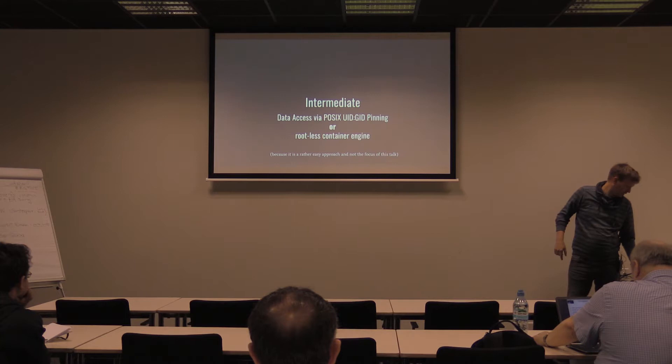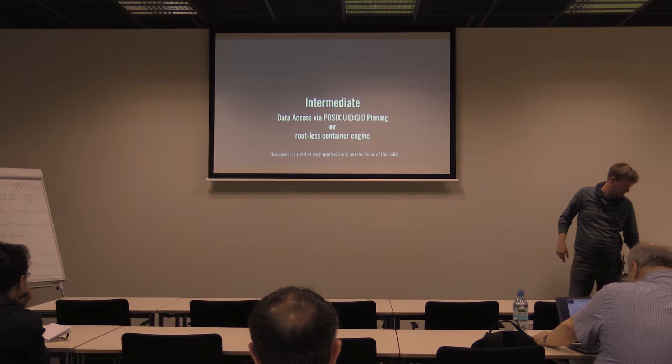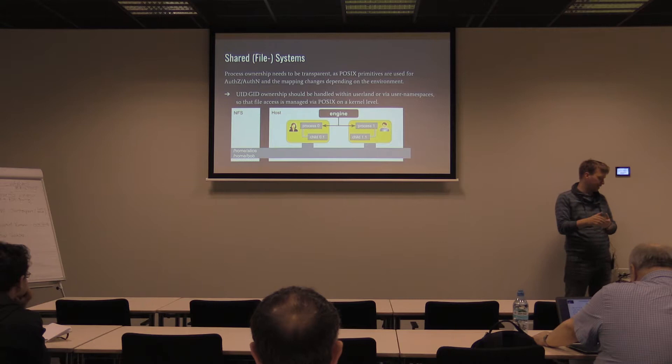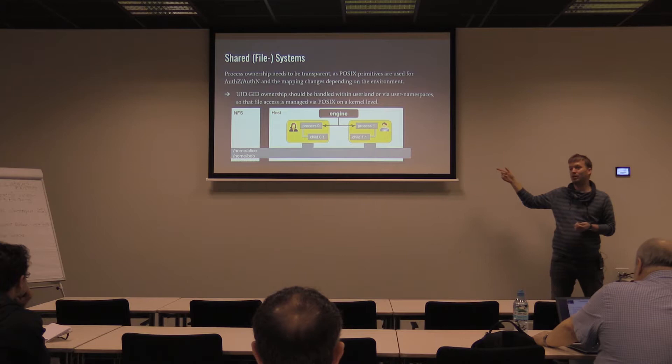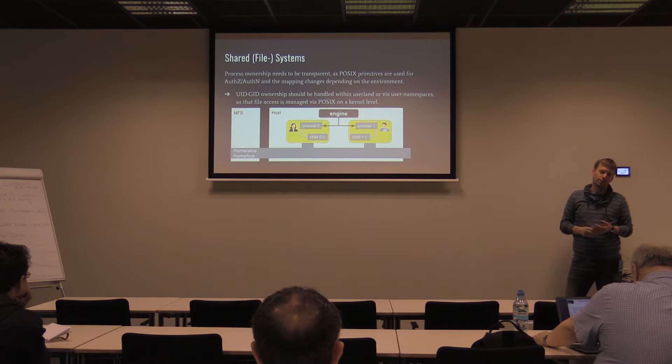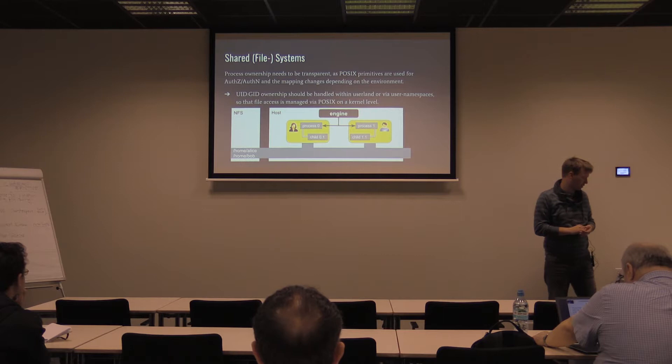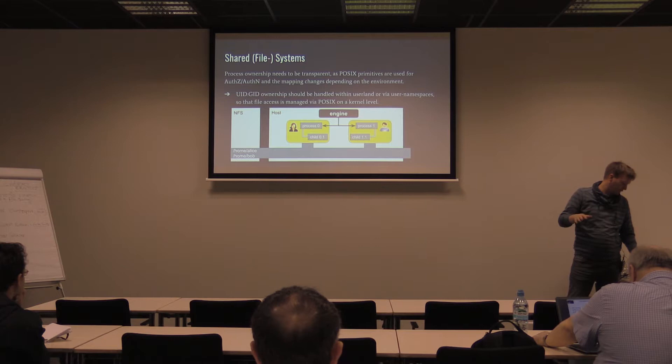The more important second piece of hardware access is shared file system access. One approach is to map the user ID and group ID within the container — so if you're 'bob', your processes run as your user ID and when you access a shared file system the kernel grants access via your user ID and group ID, giving you the same access model as outside the container. This should solve many current problems, though I've heard from Michael Jennings that there are still some flaws — but it's at least one straightforward approach.